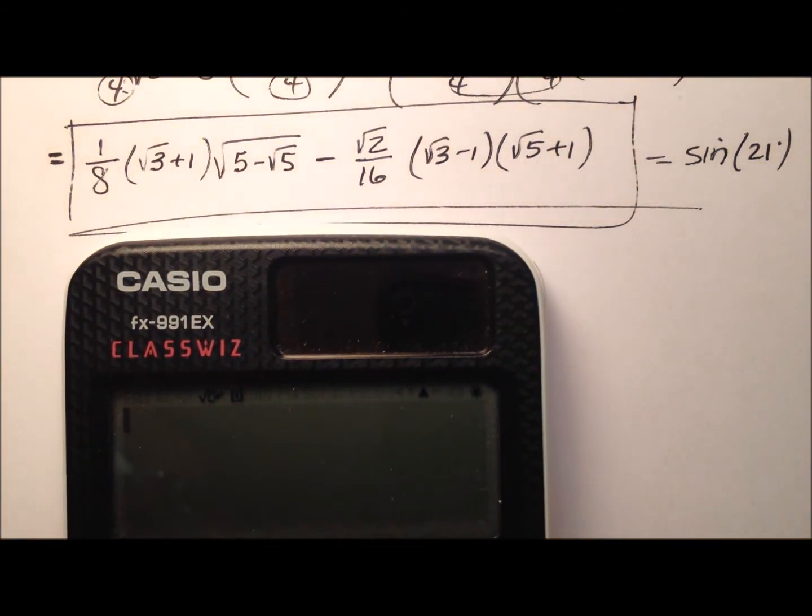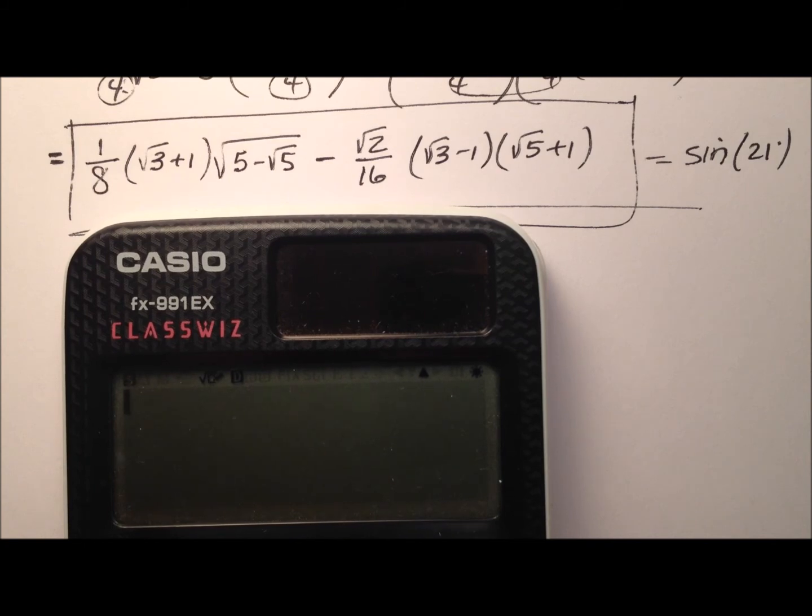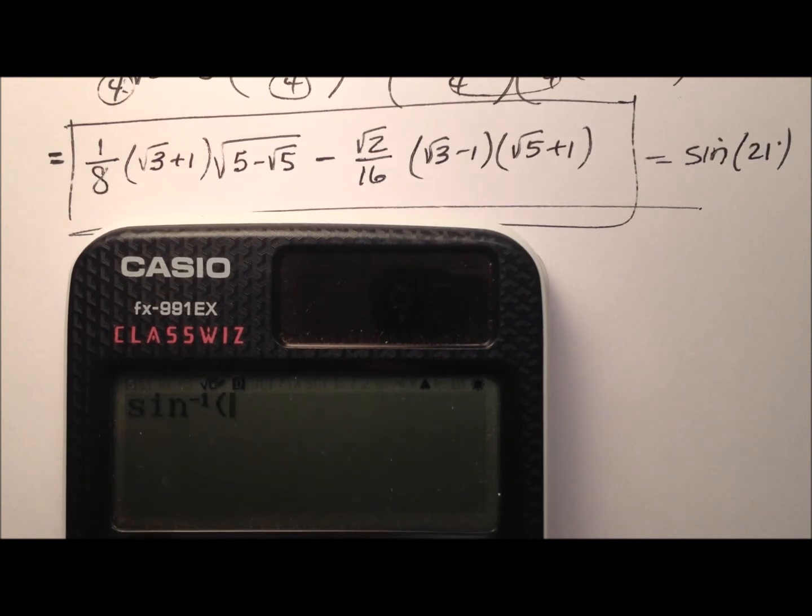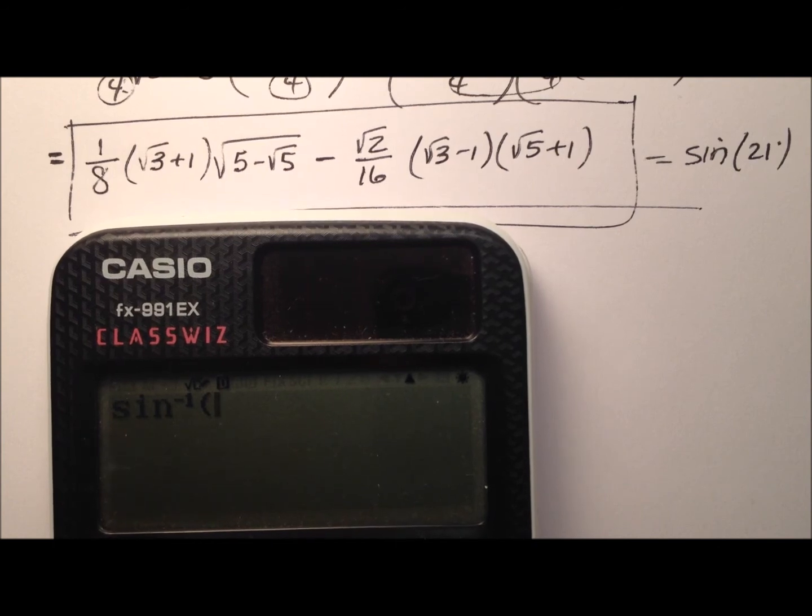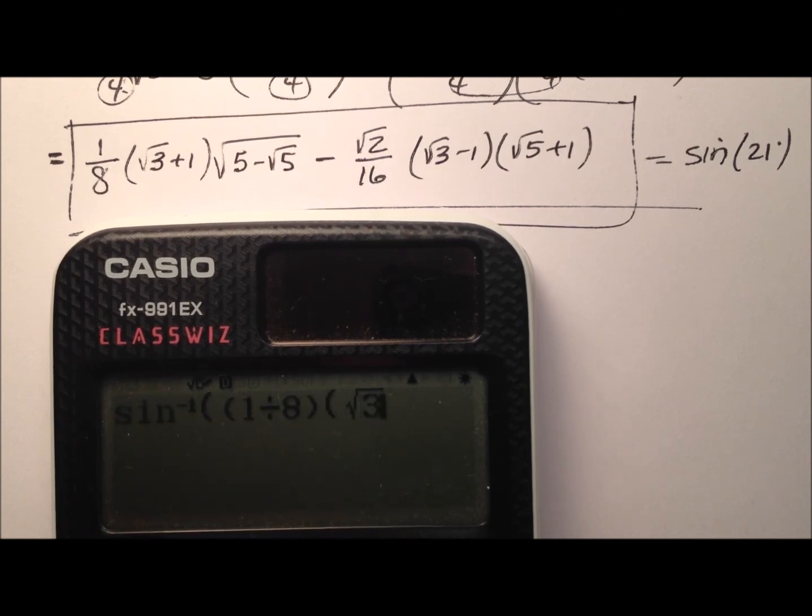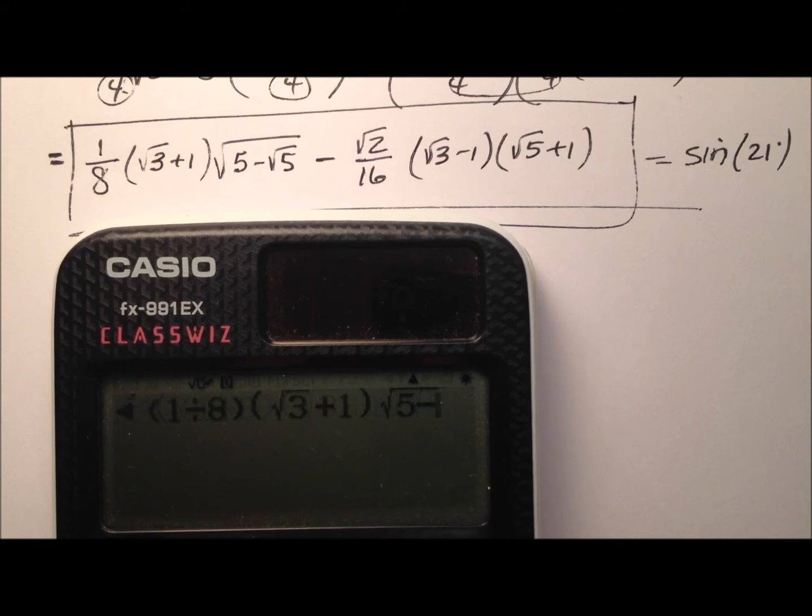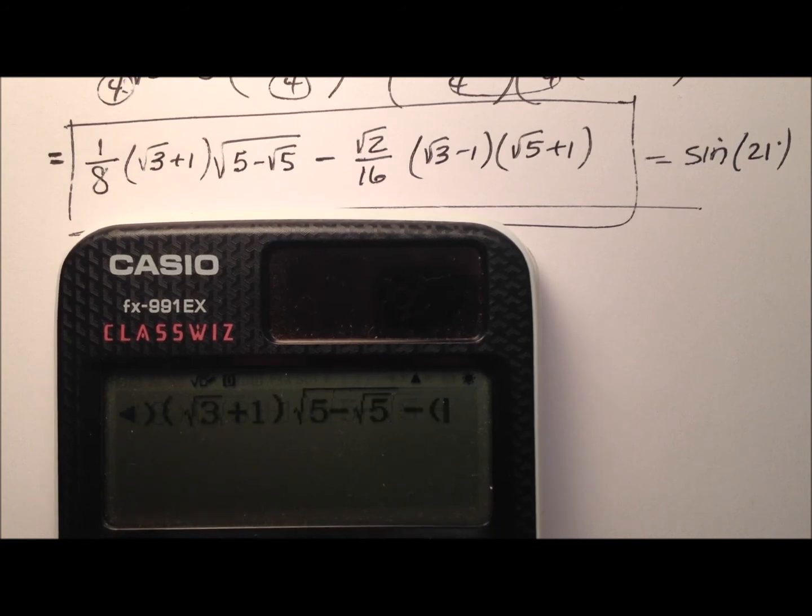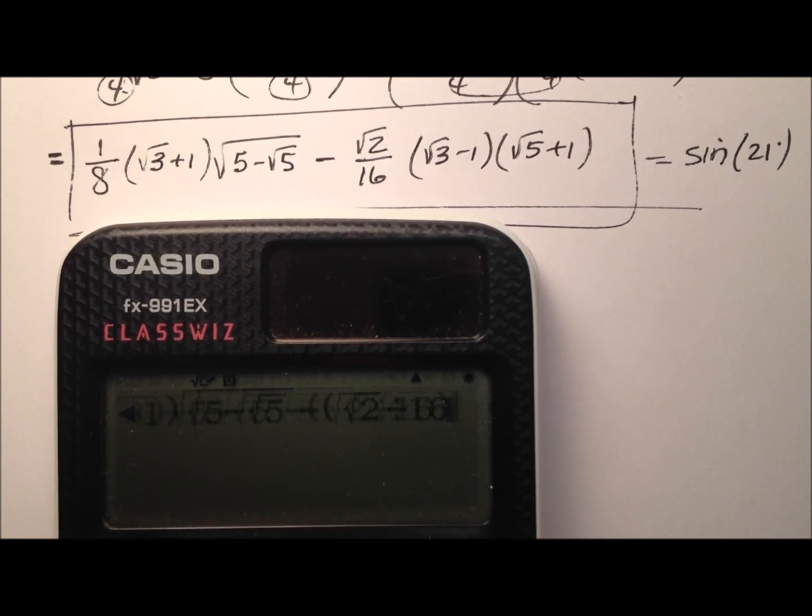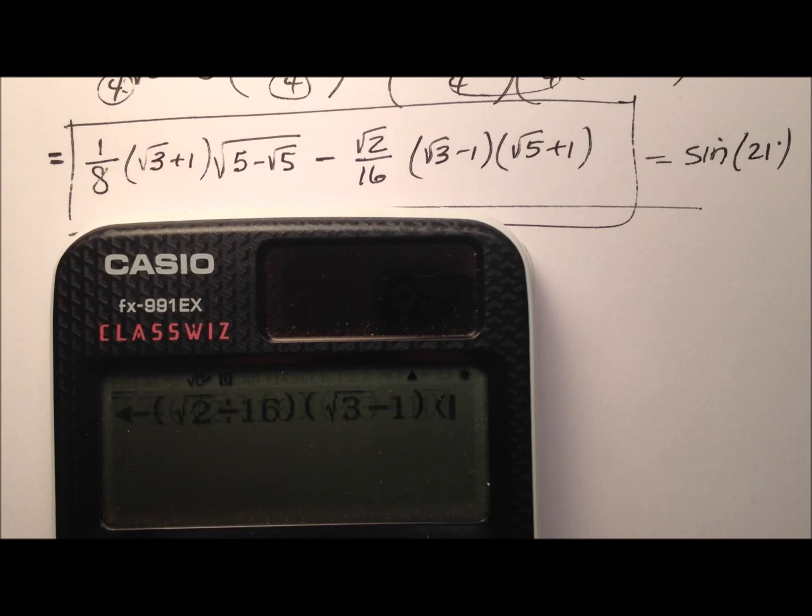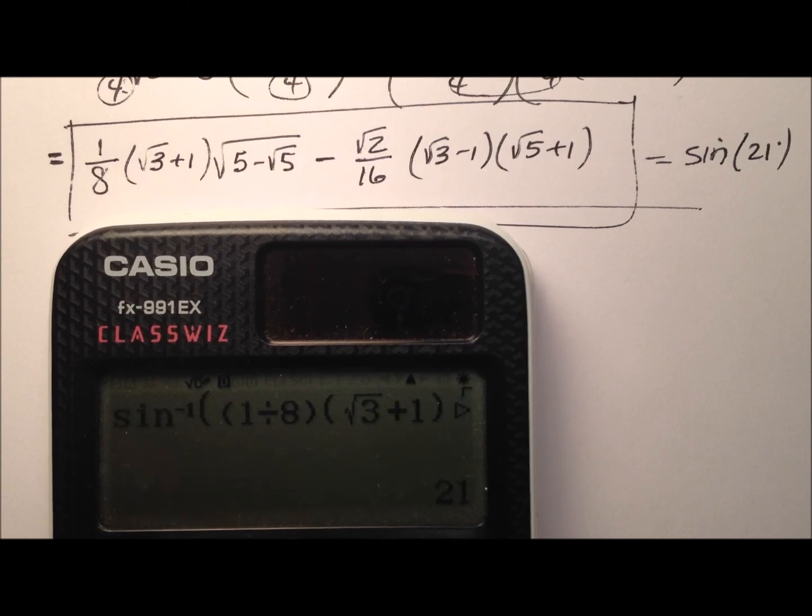Okay, so here's our calculator. So let's go ahead and take the inverse sine and we'll put this ratio in and we'll see if we get 21 degrees. So it's this whole thing, so let's start by taking the one-eighth and multiplying that by the square root of 3 plus 1, and then we'll multiply that by that square root expression there. And then we'll jump out of the radical, minus, and then we'll take the square root of 2 divided by that 16, multiplied by the square root of 3 minus 1, multiplied by the square root of 5 plus 1. Let's close all that stuff up and we get 21 degrees.